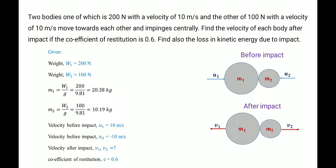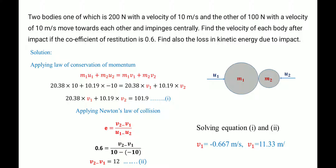We also need to find the loss in kinetic energy during impact. From the given weights, we calculate masses as weight divided by g. Before impact, the first body moves at +10 m/s (towards right, taken as positive), and the second body moves at −10 m/s (towards the negative direction of the X-axis). We will apply two principles: the law of conservation of momentum, and Newton's law using the coefficient of restitution formula.